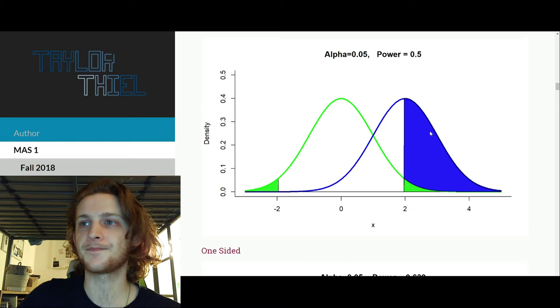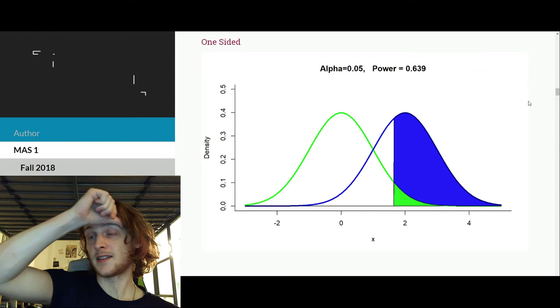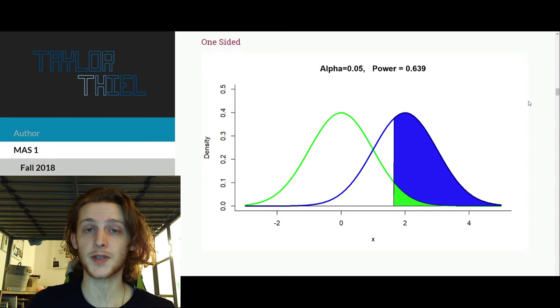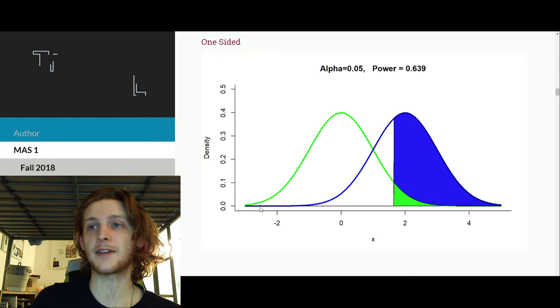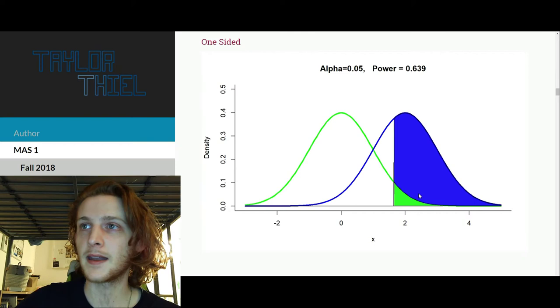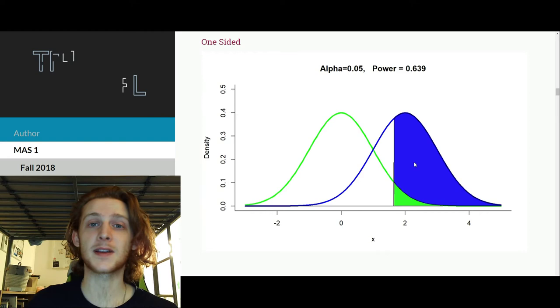Now, alternatively, what we could have done is a one-sided test. So, again, our alpha is 0.5. It is just the same as the previous. 5% of the time, we are going to reject the null, even though the null is true. So that is unchanged. But simply by saying, instead of doing half and half on each side of the green distribution, if we just do a one-sided test, you see that actually improves the amount of shaded region in our blue curve. Because now we're seeing that when the alternative is true, 64% of the time, we're going to successfully reject the null hypothesis.